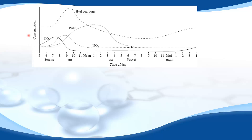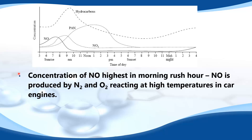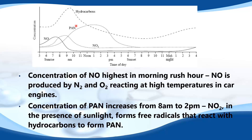Next we'll look at the graph of concentration of pollutants against time of day. The concentration of NO is highest in the morning rush hour, around 7 to 8 o'clock, because nitrogen monoxide is produced by nitrogen and oxygen reacting at high temperatures in car engines. The concentration of PAN increases from 8 AM to 2 PM, because nitrogen dioxide — a secondary pollutant formed from nitrogen monoxide in the presence of sunlight — forms free radicals that react with hydrocarbons to form PAN.